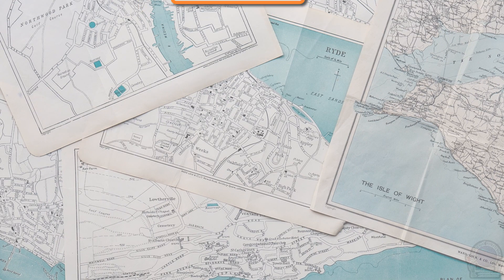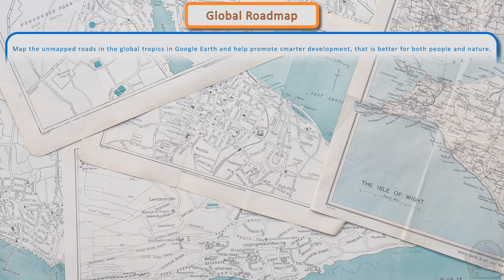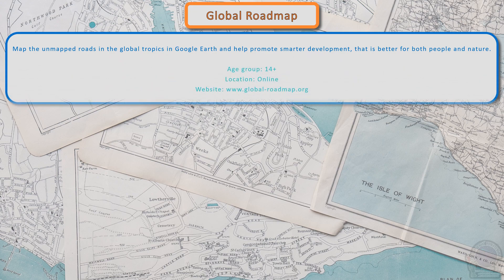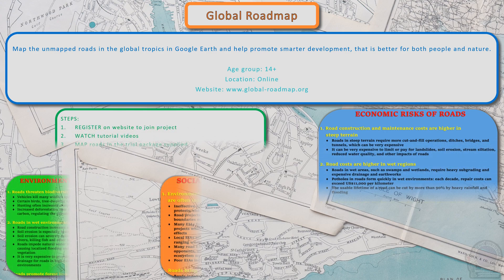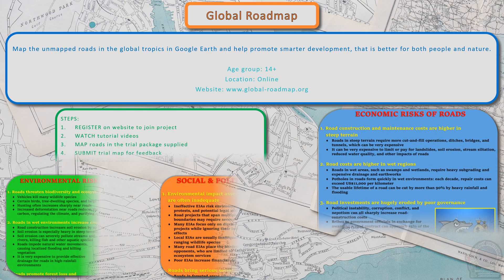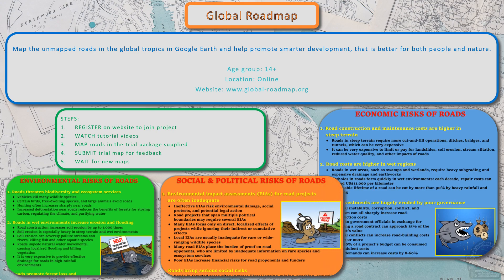Global Road Map is an initiative to map the unmapped roads in the global tropics in Google Earth. This helps promote smarter development that is better for both people and nature. Register on the website and follow the tutorial videos. You will be trained on a trial map before you can assist with unmapped roads.